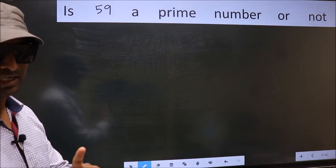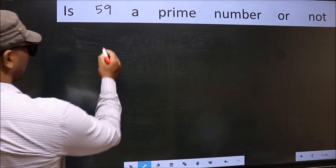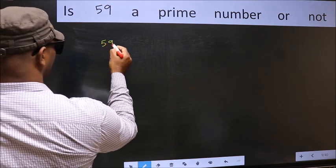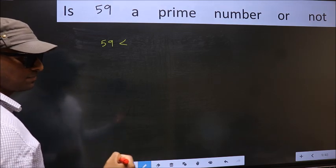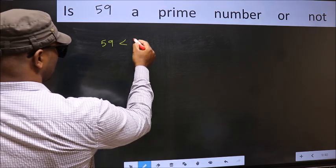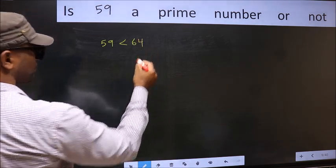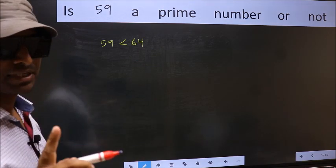For that, step 1. Given number is 59. This is close to which perfect square number? This is close to 64. This is your step 1.